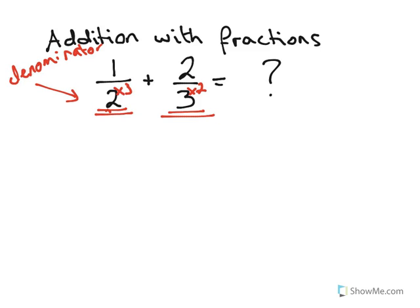So if I expand my fraction by multiplying one-half by three on the top and the bottom, and two-thirds by two on the top and the bottom, what happens? Well, three times one is three, two times three is six.